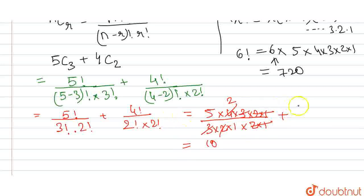Plus, this part will be 4 into 3 into 2 into 1 divided by 2 factorial means 2 into 1. 2 factorial means 2 into 1, as we know 2 into 1 is 2. So it will be 2 into 1 and 2 ones are 2 to 1.